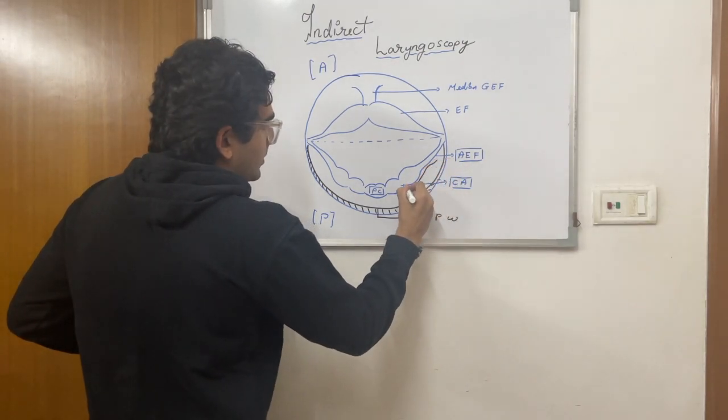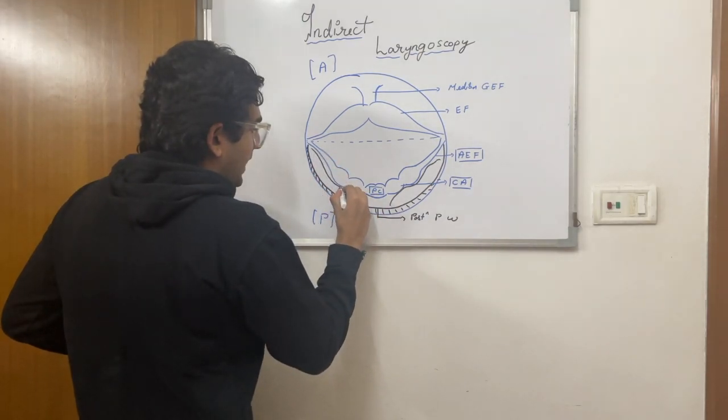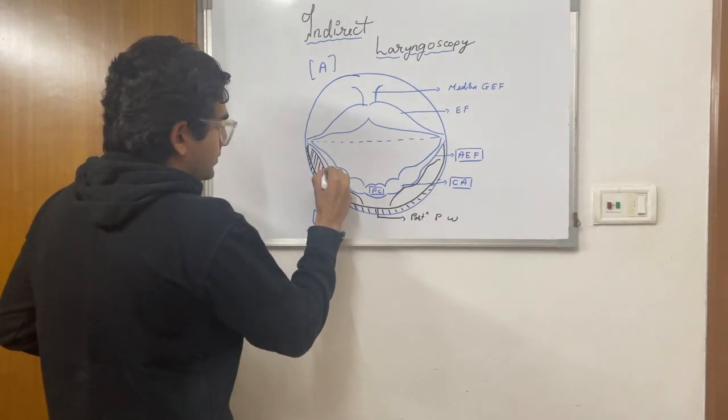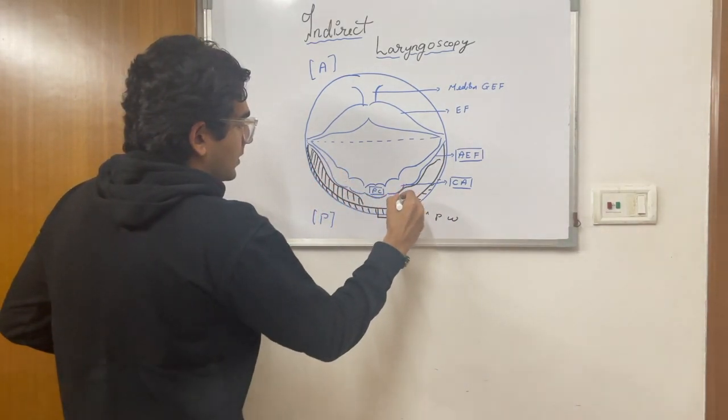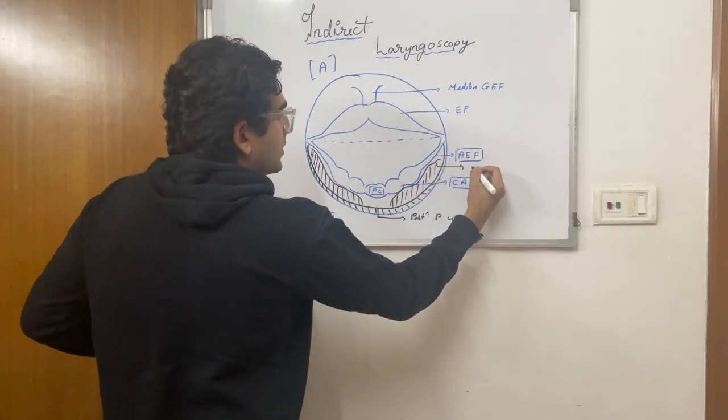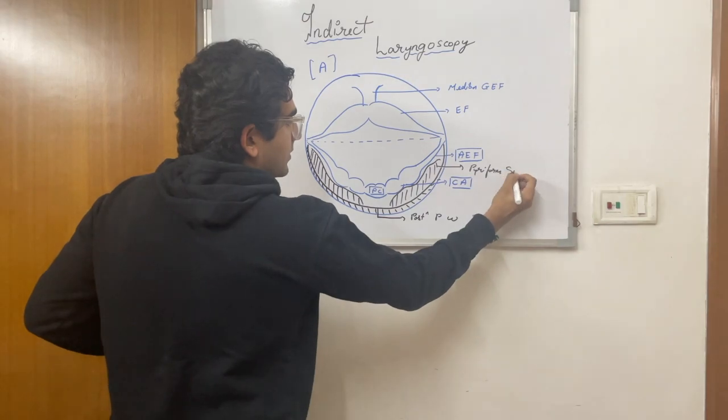And this portion in between, these are the two pyriform sinuses.